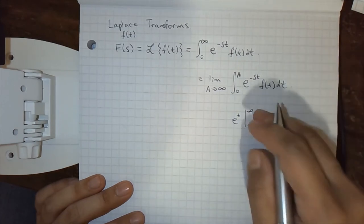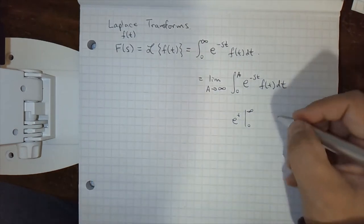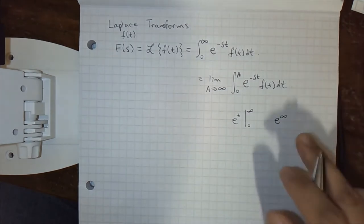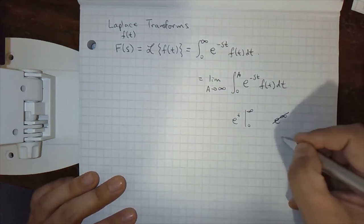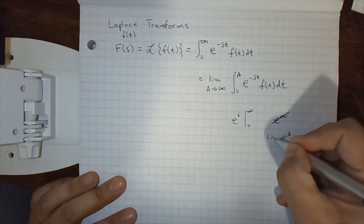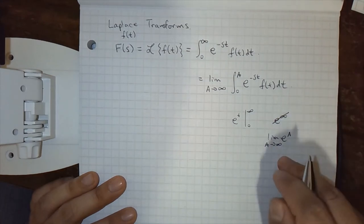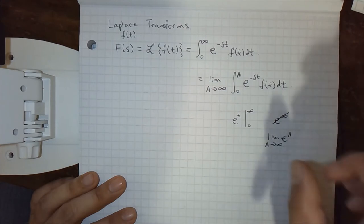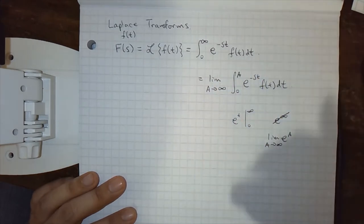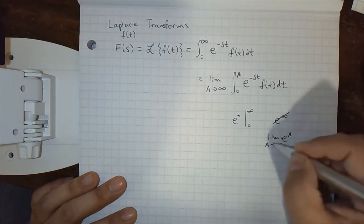You don't have to write the limit, but don't write e to the infinity. That's not a thing. This is not defined. You can't take e to the power of infinity. You can take e to the power of a and then take the limit as a goes to infinity. That's fine. But in general, don't start treating infinity as numbers. Use the limit or not, you can skip those steps if you want. It's up to you.